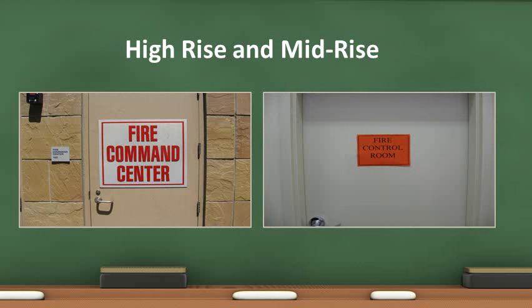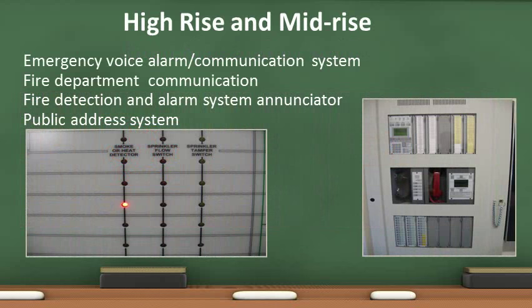If the fire alarm panel is located inside a room, a sign indicating its location shall be provided — the sign may read Fire Command Center or Fire Control Room. The fire alarm panel may include an emergency voice alarm communication system that plays a recorded message informing occupants of a fire and how to exit. It may also include a fire department communication system allowing firefighters to communicate directly with staff in the fire control room, a fire detection and alarm enunciator panel showing the location and type of alarm, and a public address system allowing building representatives to make announcements on selected or all floors.